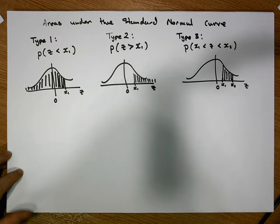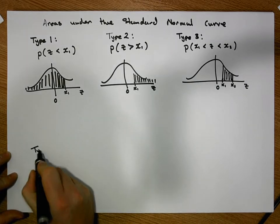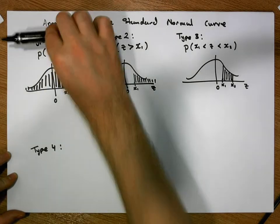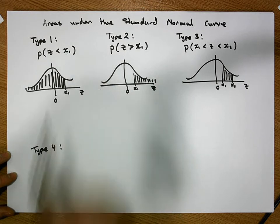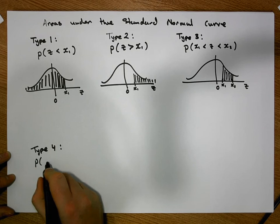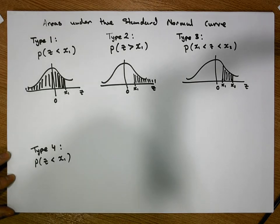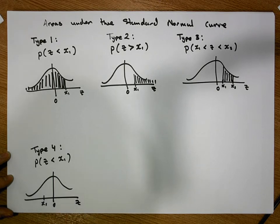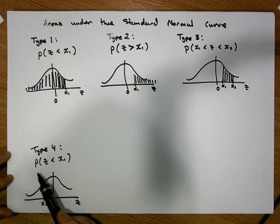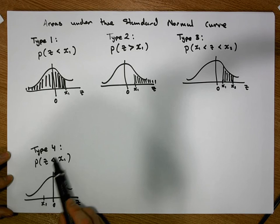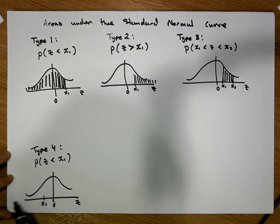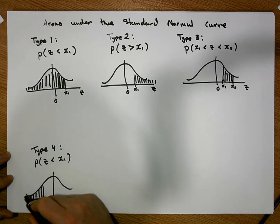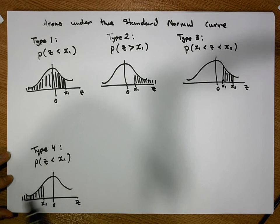So type 1, type 2, and type 3 simply deal with positive bounds. Now let's look at some negative scenarios. Type 4 probability is going to be exactly the same as the type 1 probability but in this case the bound is a negative value. We're interested in calculating the probability of observing a z score that's less than a particular negative value x1. Since x1 is on the left-hand side of zero, we're interested in the area on the left-hand side of x1 — this is a left-hand tail calculation.